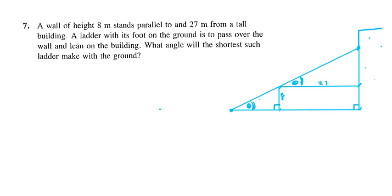What we can do is express the ladder as parts of two separate triangles. This part could be x and this part could be y. So really, it's the sum of x and y that we want to minimize. We're trying to minimize x plus y. This is one way of doing it — I think it's the most straightforward way. We're going to express x and y both in terms of theta.